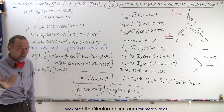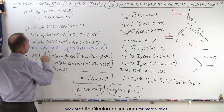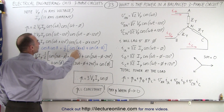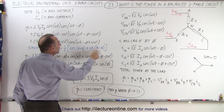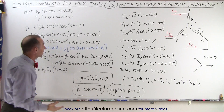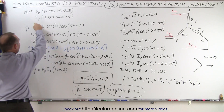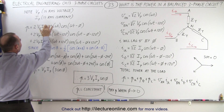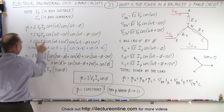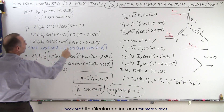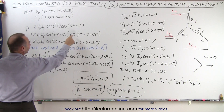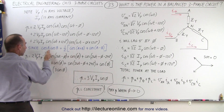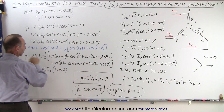We apply the trigonometric identity: the product of cosine a times cosine b equals one-half times the cosine of a plus b plus the cosine of a minus b. We factor out two times Vp times Ip — the phase voltage and phase current. Since multiplying the cosines yields a one-half factor three times, we also factor out one-half, and the two cancels to one-half.